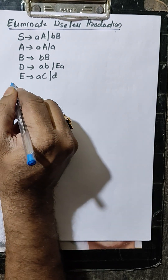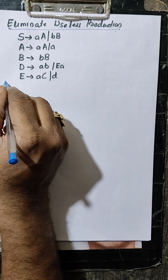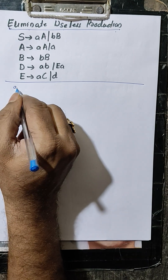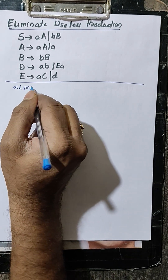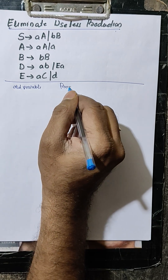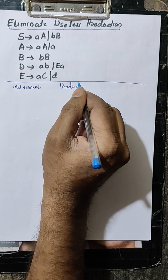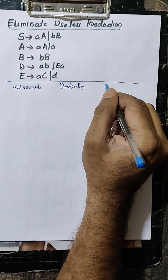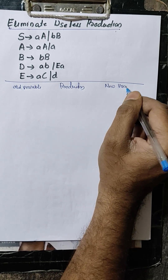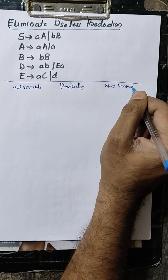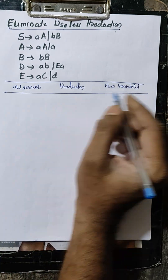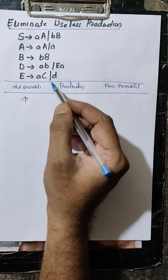How to eliminate unit production? First, this is a simple table with columns: old variable, productions, and new variables. Within this, old variable is initially empty.